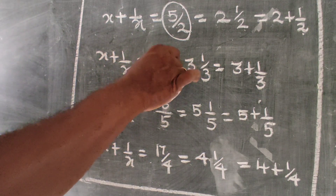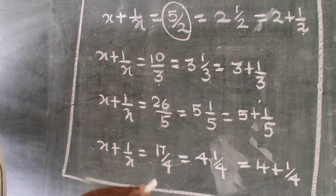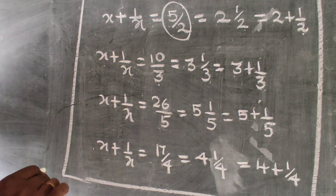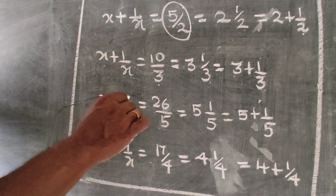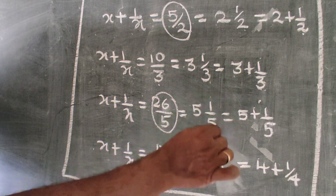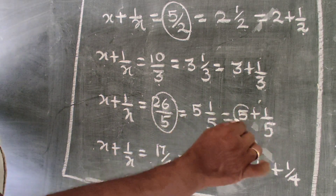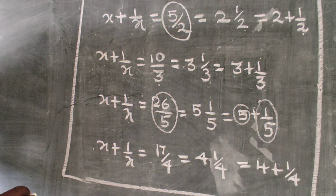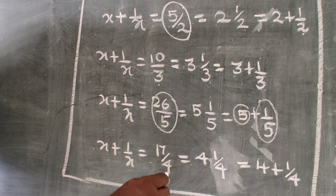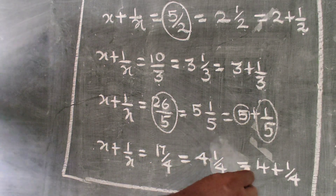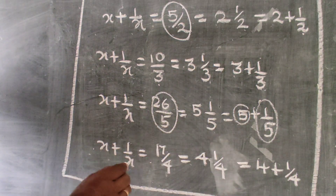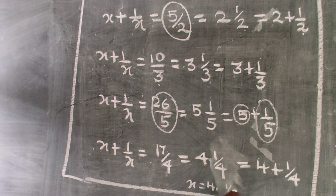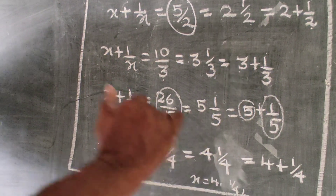More examples: if x + 1/x = 26/5, then x = 5 or 1/5. If x + 1/x = 17/4, then x = 4 or 1/4. This is a shortcut pattern — it's all about practice to get the idea.